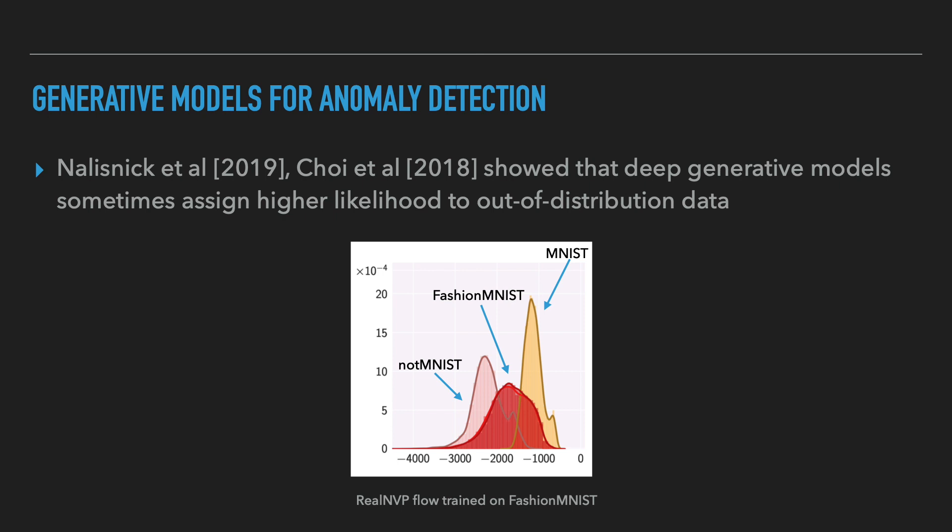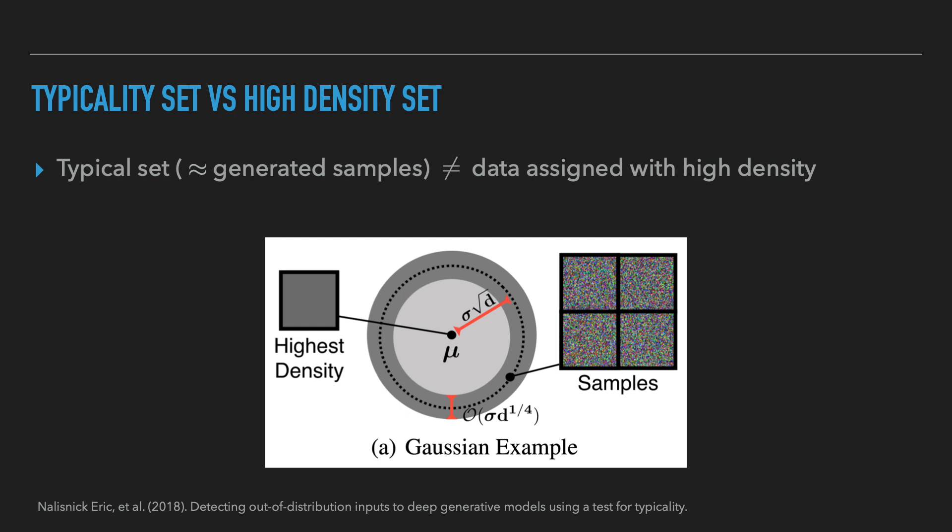An important question is why does this happen. The first reason is based on the notion of typicality. The failure of generative models to detect OOD data is especially surprising given the fact that they can produce samples semantically similar to the training data. Referring to the graph from the previous slide, the normalizing flow can produce high-fidelity images of clothing and none of the samples look like MNIST digits. This seeming paradox can be partially resolved by considering the difference between high density and typical sets of a probability distribution.